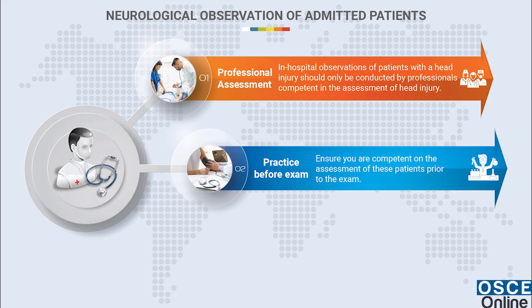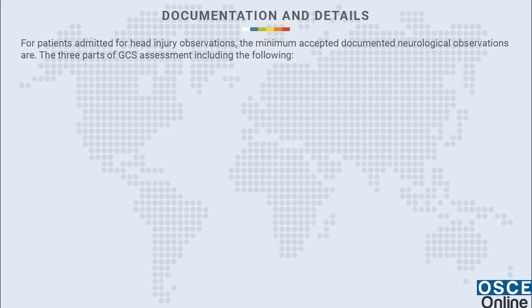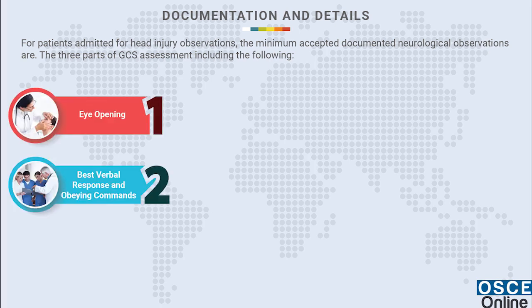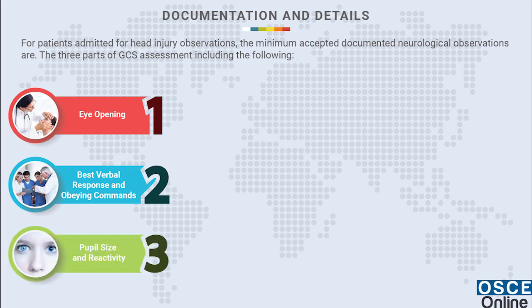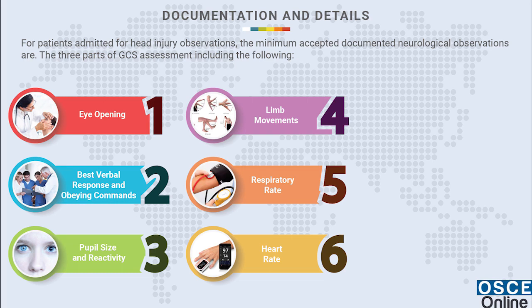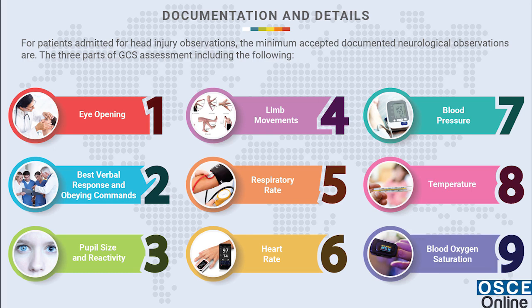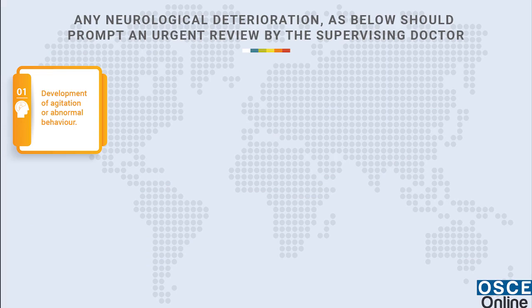Ensure you are competent in the assessment of these patients prior to the exam. Use evidence-based practice by following the standard accepted GCS monitoring technique, therefore demonstrating understanding and competency in this skill. For patients admitted for head injury observations, the minimum accepted documented neurological observations include: eye opening; best verbal response and obeying commands; pupil size and reactivity; limb movements; respiratory rate; heart rate; blood pressure; temperature; and blood oxygen saturation.